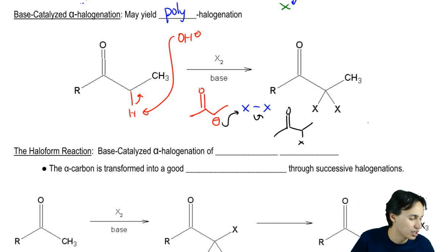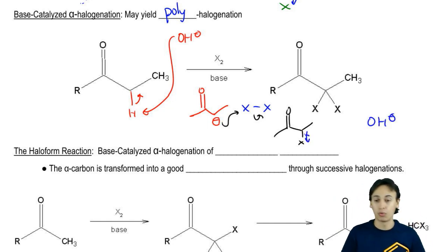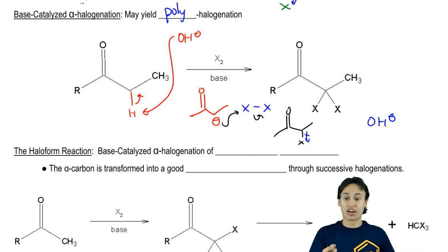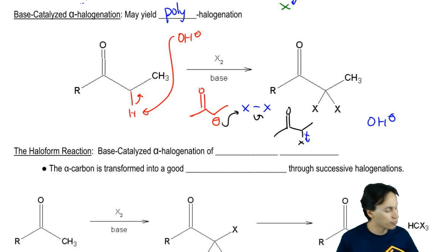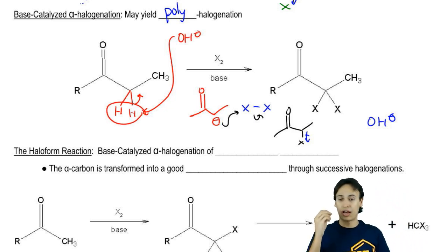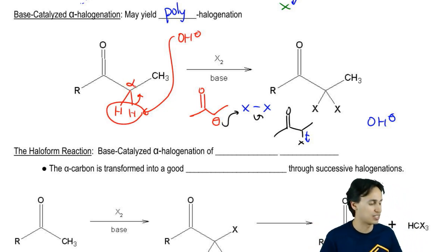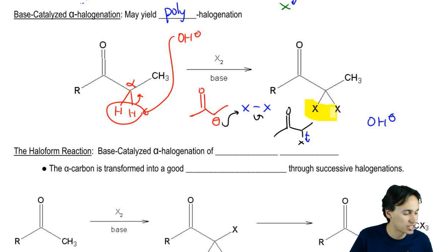Now, when it sees that second equivalent of base, guess what's going to happen? Now, we have a dipole pulling away so it's going to be easier to put a negative charge there because the negative charge is going to be stabilized by the halogen. Therefore, we're going to replace every single hydrogen that was there. We're going to replace all of those alpha hydrogens with X's and we're going to get polysubstitution.